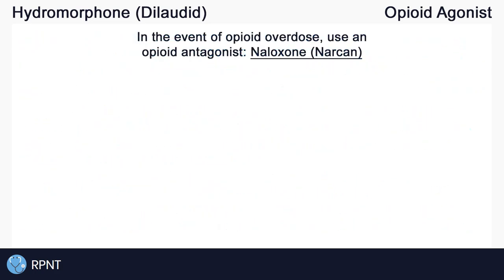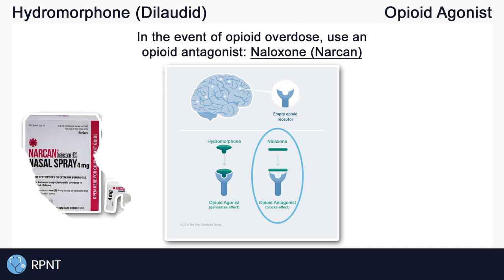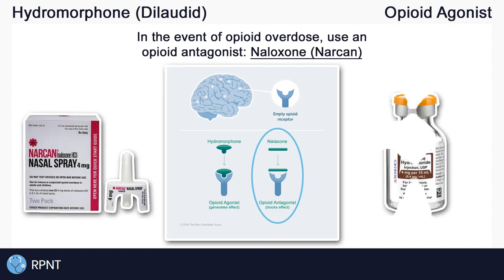In the event of opioid overdose, an opioid antagonist such as naloxone, also known as Narcan, can be used to prevent further opioid binding to the opioid receptors. Naloxone often comes as a nasal spray or as an injection. And that's about it for the basics of hydromorphone. If you have any questions, please let me know in the comments or visit rpnt.ca for more help.